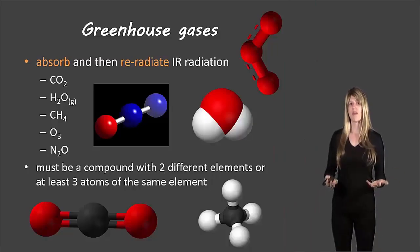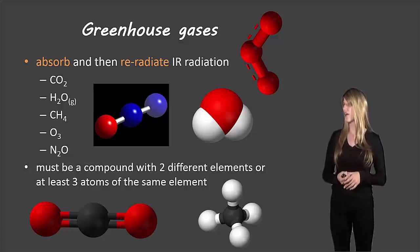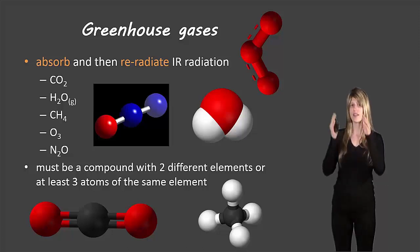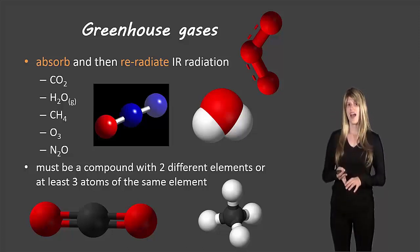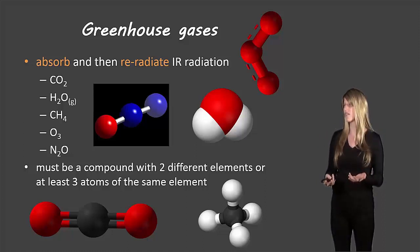So what actually makes a greenhouse gas? Well they need to be able to absorb and then re-radiate the infrared radiation. And I put a couple examples there, carbon dioxide, water vapor, that little g in brackets means it's a gas, so water vapor, methane, ozone, nitrous oxide. So these must be compounds with at least two different elements or three of the same elements. So something like ozone, it just has oxygen in there, but there are three oxygens attached together, so that can make it a greenhouse gas. Otherwise it needs to have at least two different elements.